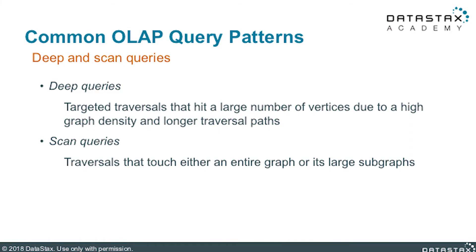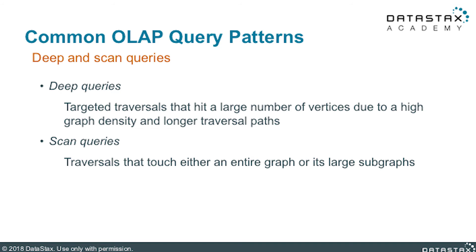To decide between Gremlin OLAP traversals and DSC Graph frames, it is useful to distinguish between deep and scan queries. Deep queries are targeted traversals that hit a large number of vertices due to high graph density and longer traversal paths — Gremlin OLAP traversals will do best here. Scan queries are traversals that touch either an entire graph or its large subgraphs, and DSC Graph frames will be a better choice for scan queries.